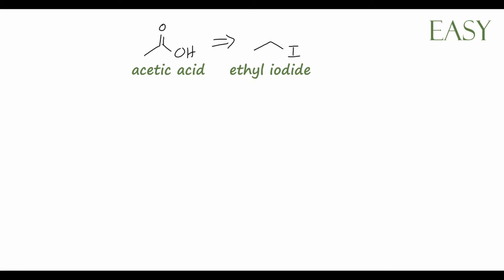Before I walk you through the solution, please pause the video here and try the problem on your own, and then resume when you think you've found an answer. With retrosynthetic analysis, I always like to look at the number of carbons. We've started with two carbons in the ethyl iodide, and we actually have the same number — only two carbons in the acetic acid as well. So we don't have to add or subtract any carbons here.